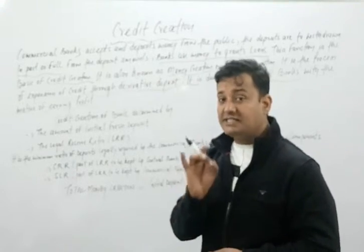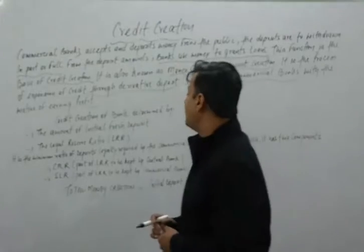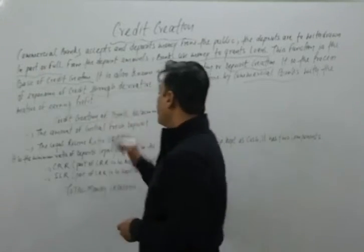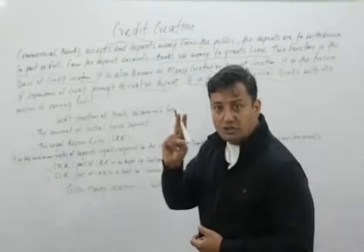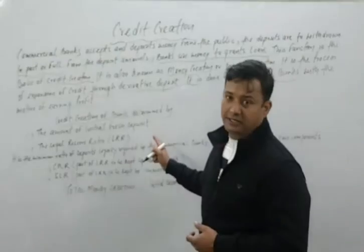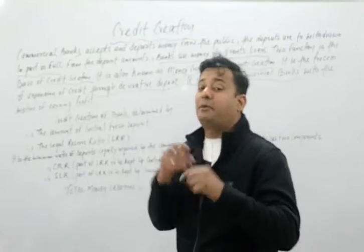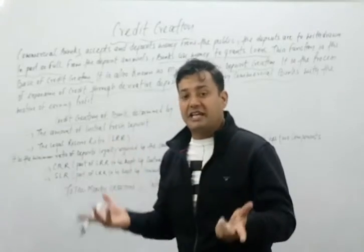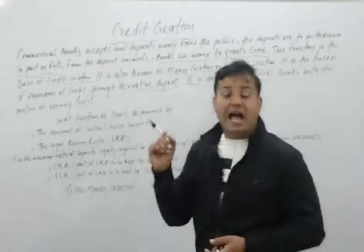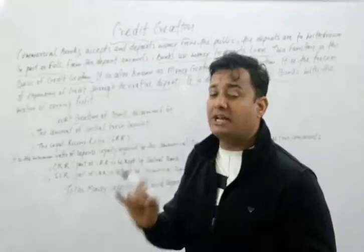Credit creation is determined by two factors. The first is the amount of initial fresh deposit — the initial fresh deposit is the starting point for the entire credit creation process.